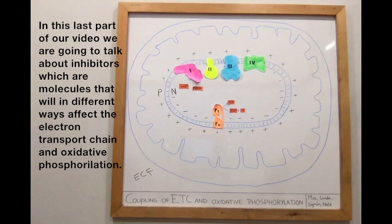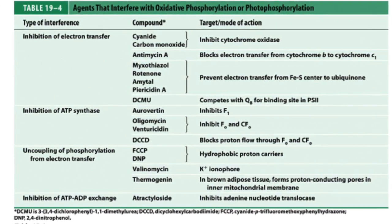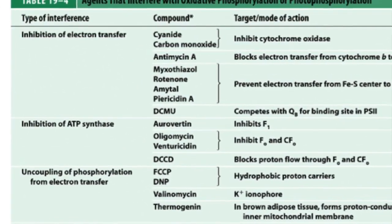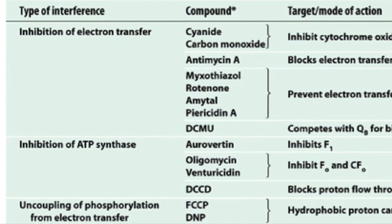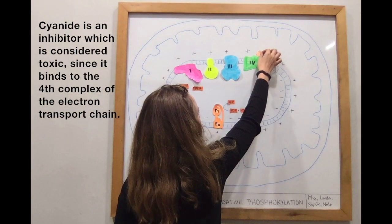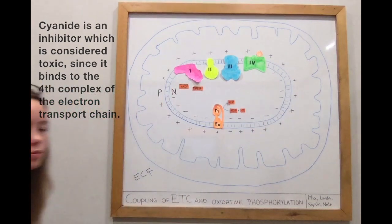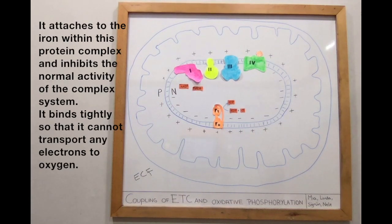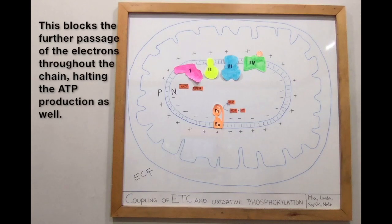In the last part of our video we talk about inhibitors, which are molecules that affect the electron transport chain and oxidative phosphorylation in different ways. As shown in the table, there are many different inhibitors, but we will use cyanide as an example. Cyanide is a toxic inhibitor that binds to the fourth complex of the electron transport chain. It attaches to the iron within this protein complex and inhibits its normal activity, binding so tightly that it cannot transport any electrons to oxygen, blocking the further passage of electrons throughout the chain.